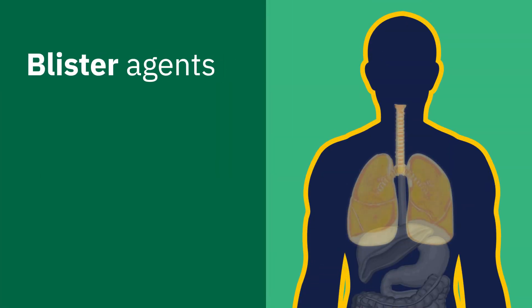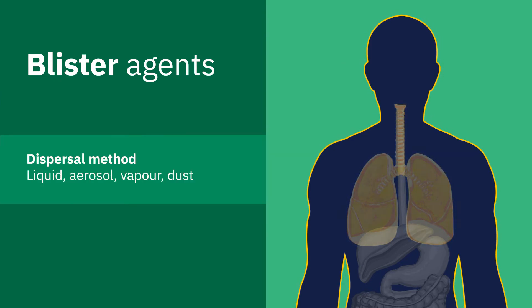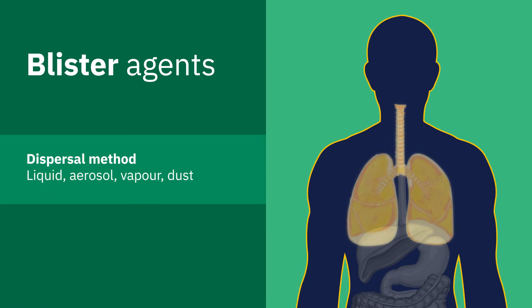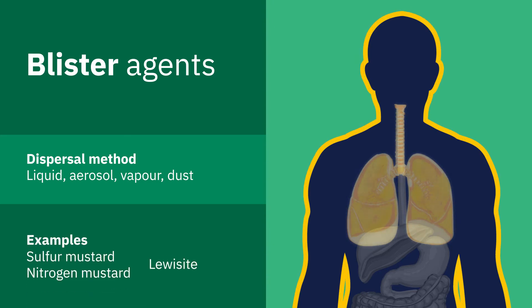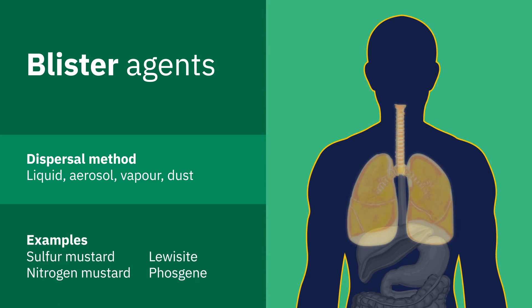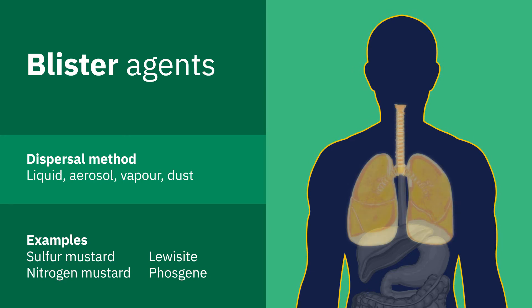Blister agents are oily substances that act first as an irritant and then as a cell poison on skin and when inhaled. They cause life-threatening blisters affecting the eyes, respiratory tract and skin.